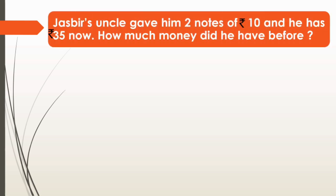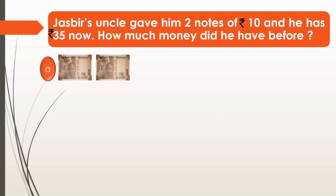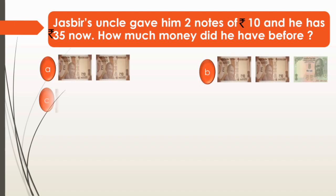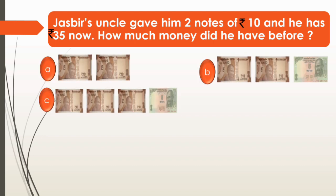Here is the first question. Jasbir's uncle gave him 2 notes of 10 rupees and he has 35 rupees now. How much money did he have before? For this we have 4 options and we have to choose one option: Option A, B, C, D.